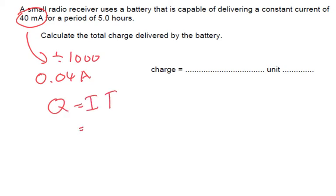So we've got 0.04 and then how long did it last? 5 hours. So 5 times by 60 times by 60. This is going to tell us the total time in seconds. So 5 times 60 times 60 is 18,000.